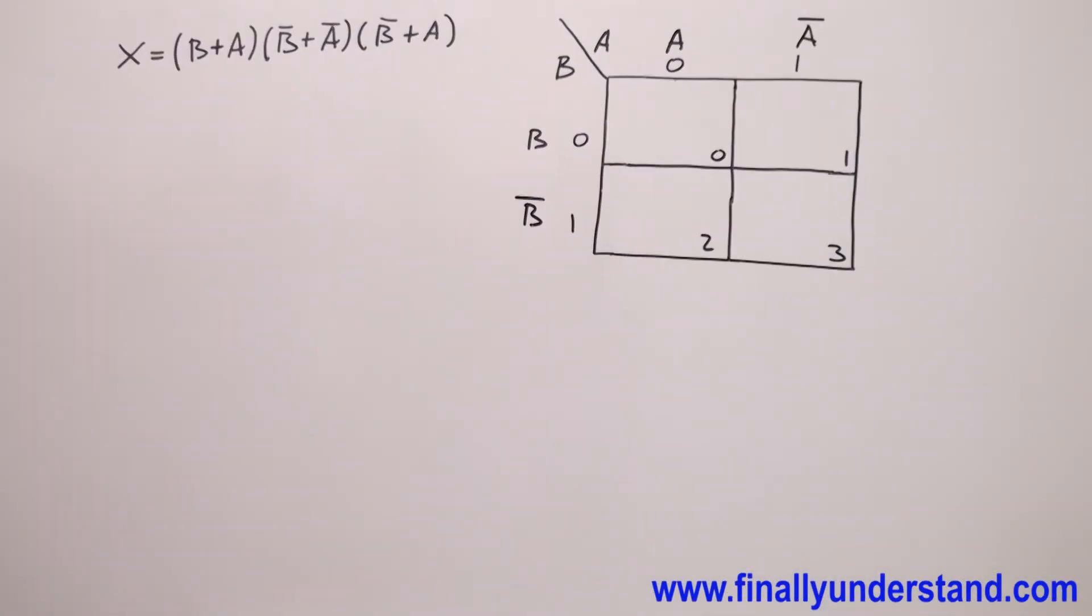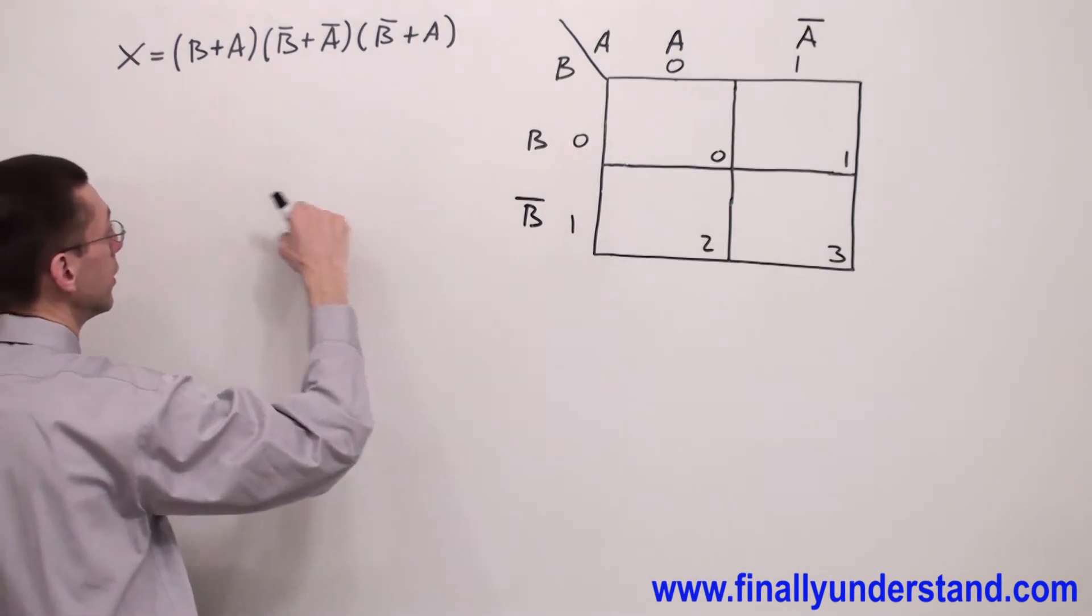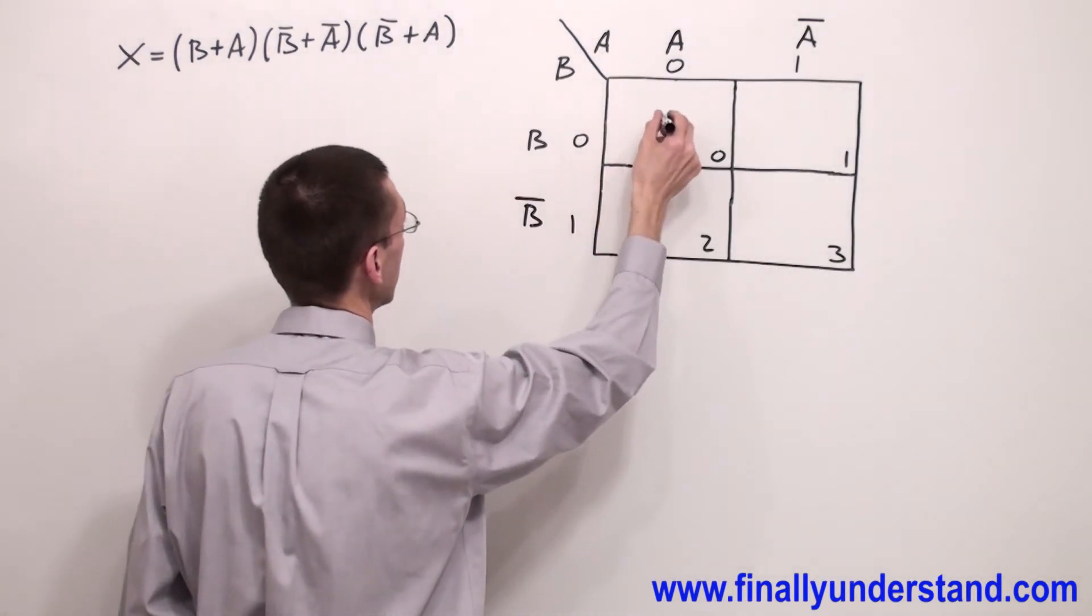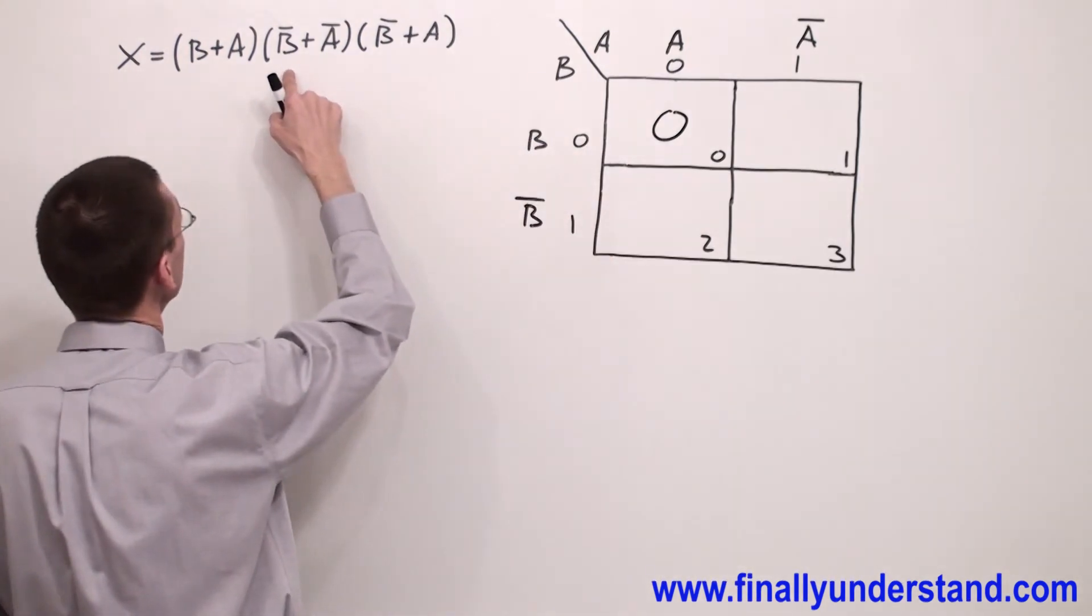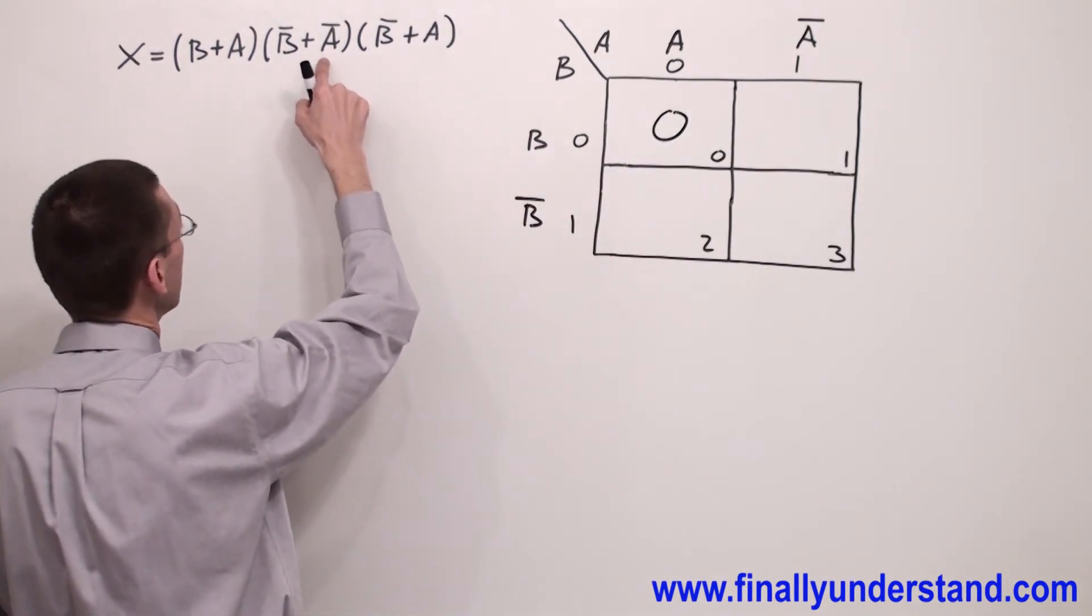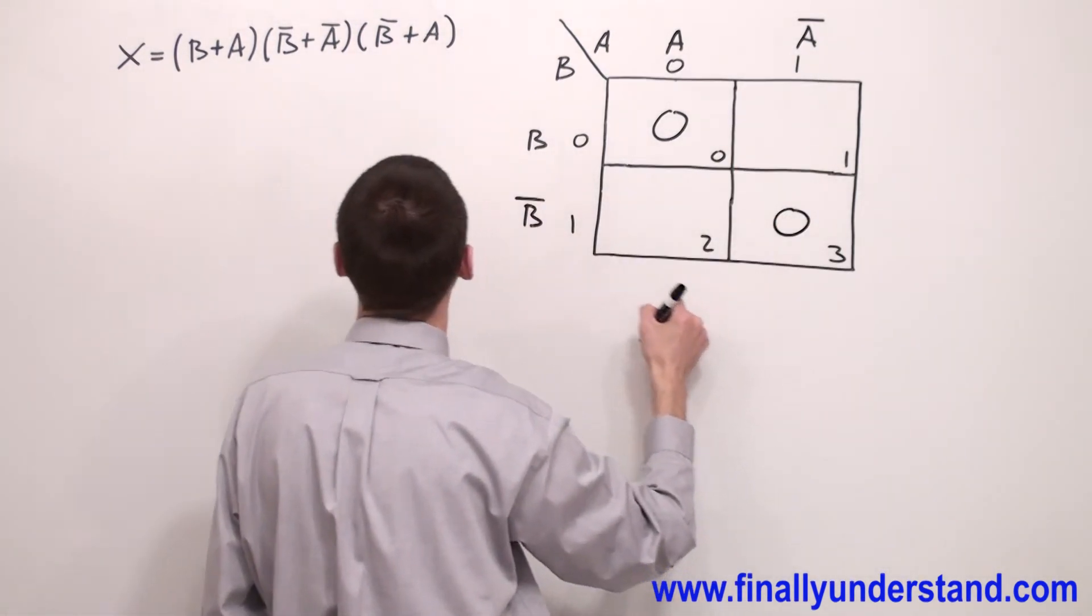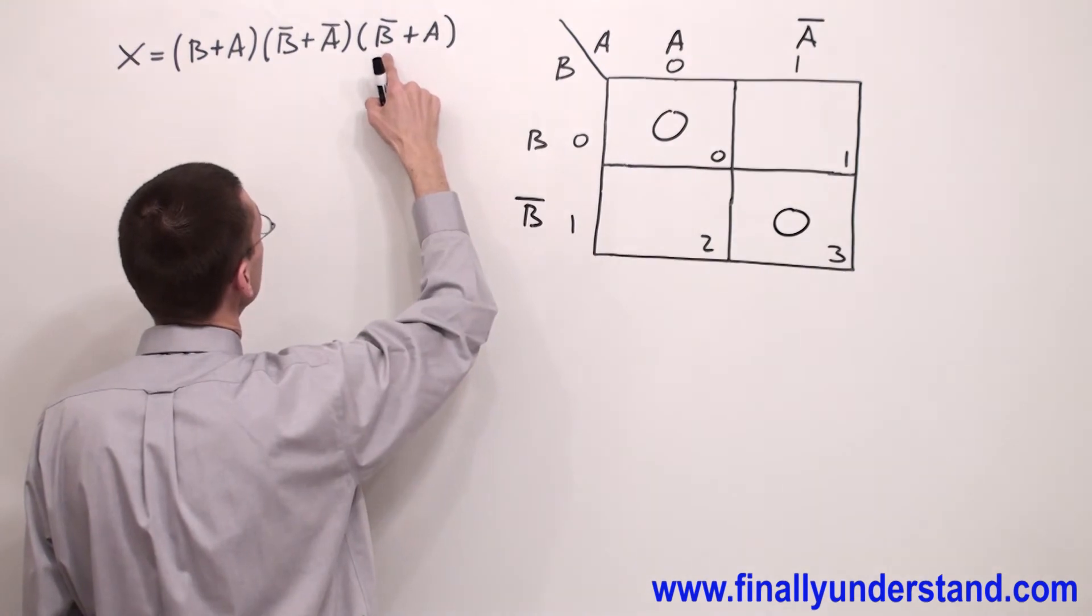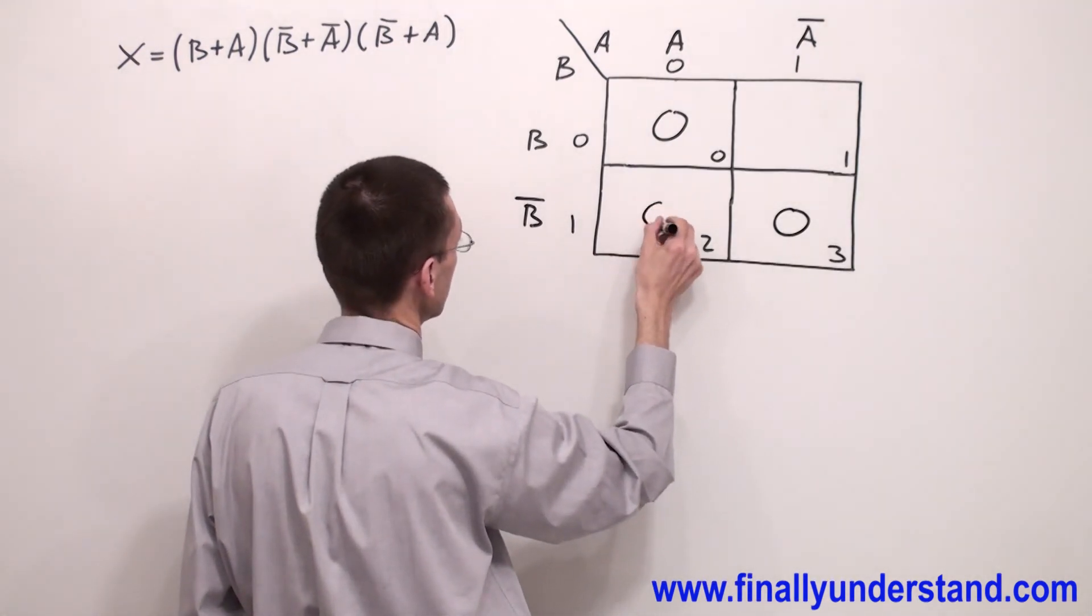Next example. Again we are dealing with POS. I have B+A, so I have to write 0 in this cell. B̄+Ā, I have to write 0 over here. And I have B̄+A, 0 over here.